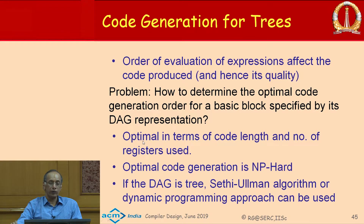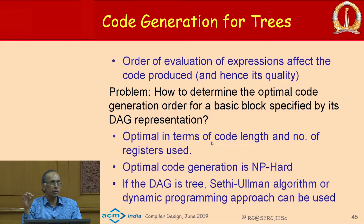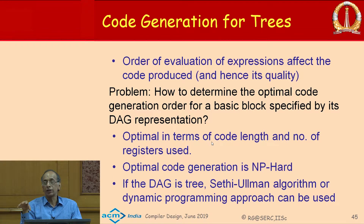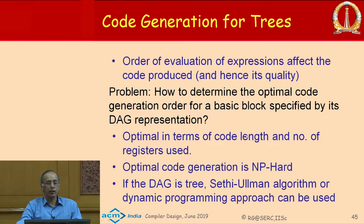When we talk about code generation, the order of evaluation of expressions really matters and influences the quality of the generated code. The problem is: how do we determine the optimal code generation order for a basic block specified as a DAG? If it is a DAG, this problem is NP-hard. But if it is a tree, we can solve it in polynomial time. Optimal here means optimal in terms of code length — number of instructions generated — and number of registers used.